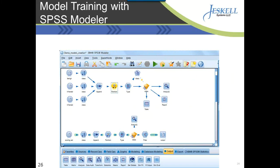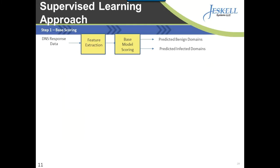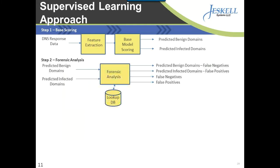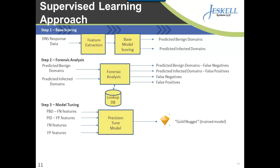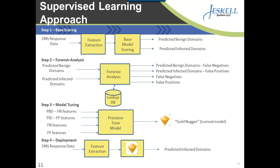Additionally, to train the models in a supervised way, we leverage IBM's SPSS Modeler. The approach with SPSS Modeler — as you can see in this screenshot — is to start with your DNS response data, extract the relevant features, and do a base scoring. In step two, we perform forensic analysis to determine if the model can correctly detect benign versus infected domains, resulting in some false negatives and false positives. In step three, we tune the model by ingesting the predicted benign and infected domains, ultimately producing a trained model with a very high degree of accuracy in detecting anomalies within your DNS subsystem. Once this model is produced, it is exported and leveraged by InfoSphere Streams, which scores network packets in real time against this model.